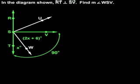the angle addition postulate tells us that x plus 2x plus 6 equals 90.